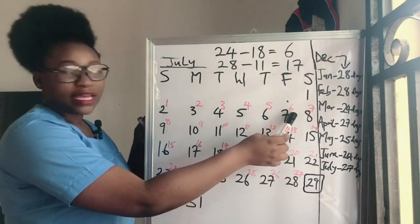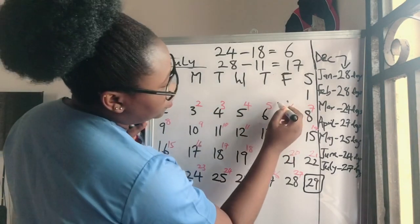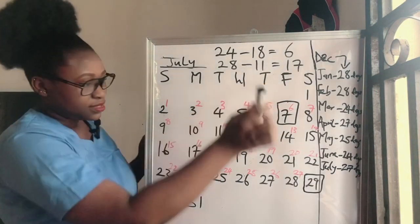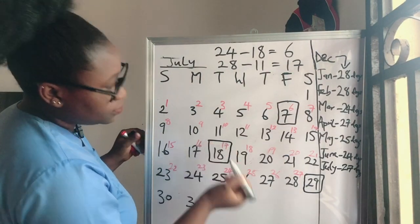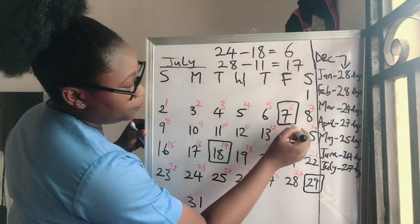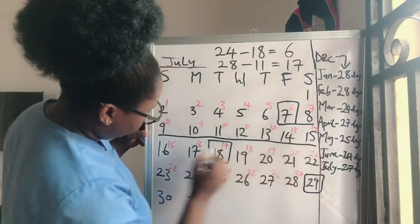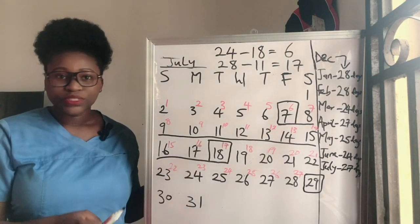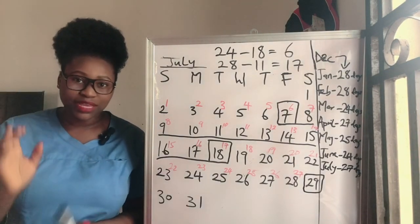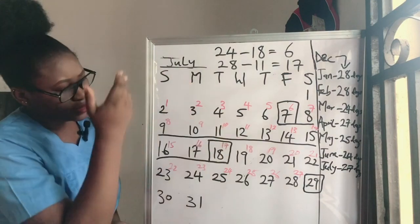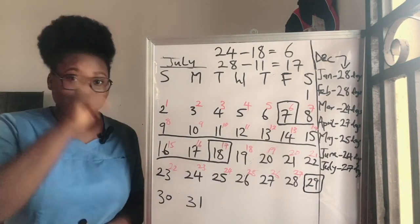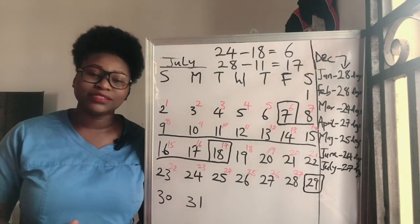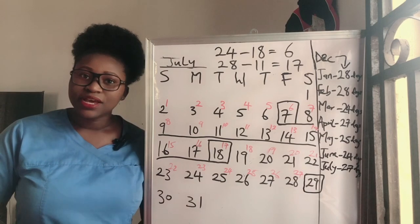Her fertile period starts from cycle day 6 and ends on cycle day 17. So on the July calendar, cycle day 6 falls on July 7th, and cycle day 17 falls on July 18th — meaning July 7th all the way to July 18th is her fertile window. This applies every month going forward: cycle day 6 to cycle day 17 is consistently her fertile period.